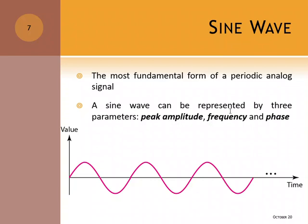A sine wave can be represented by three parameters: peak amplitude or sometimes we call it amplitude only, frequency, and phase. So what are amplitude, frequency, and phase?